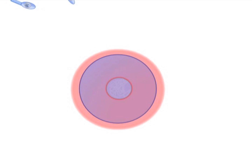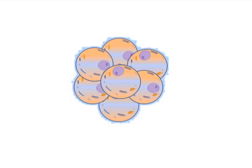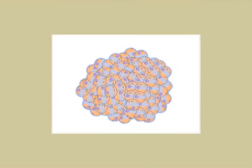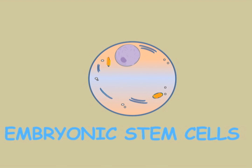We all start life the same way, with a sperm cell fusing with an egg cell to create an embryo. As the embryo develops, it divides creating a whole bunch of undifferentiated cells which then go on to form every part of the body. These are the embryonic stem cells.